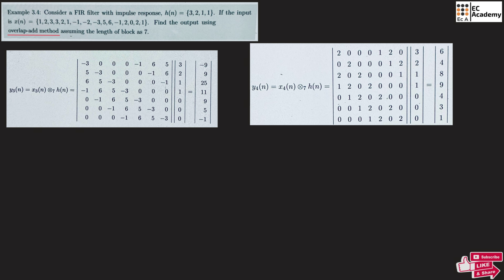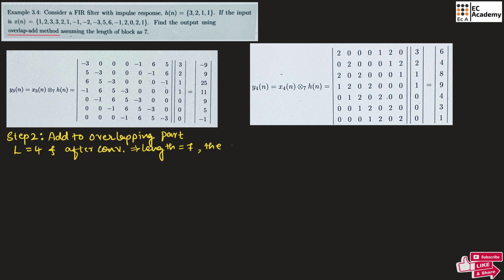Once you get the values of y1 of n, y2 of n, y3 of n, and y4 of n, we can go with step 2 which is to add the overlapping parts. Since we use block length L equal to 4 and after convolution we get length 7, the output will overlap. So the method is to add the overlapped part.